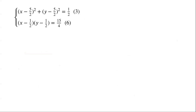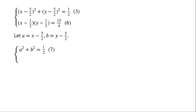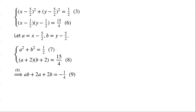We will solve it using the substitution method. Since the equations contain X − 5/2, X − 1/2, Y − 5/2, and Y − 1/2, we let A = X − 5/2 and B = Y − 5/2. Then equation 3 becomes A² + B² = 1/2, and equation 6 becomes (A + 2)(B + 2) = 15/4. Expanding and rearranging equation 8, we have: AB + 2A + 2B = −1/4.